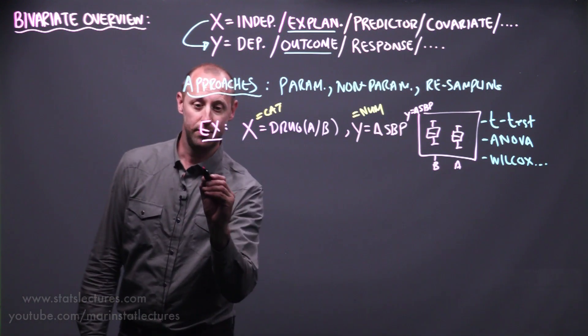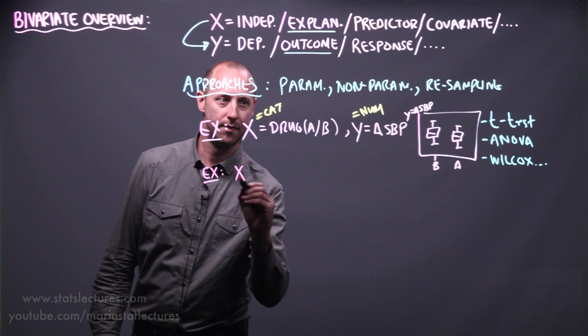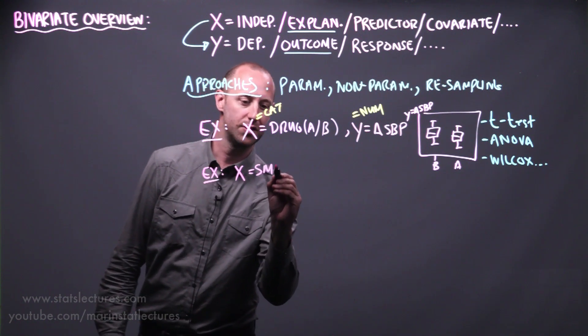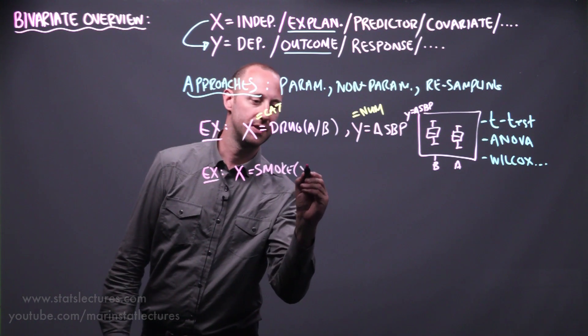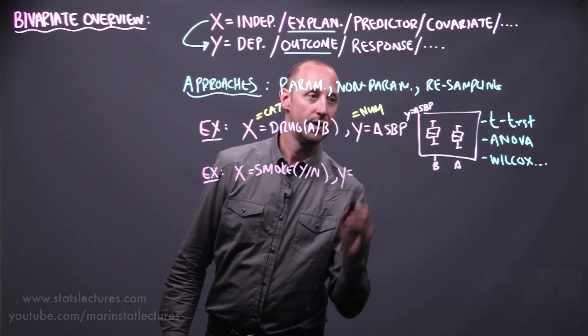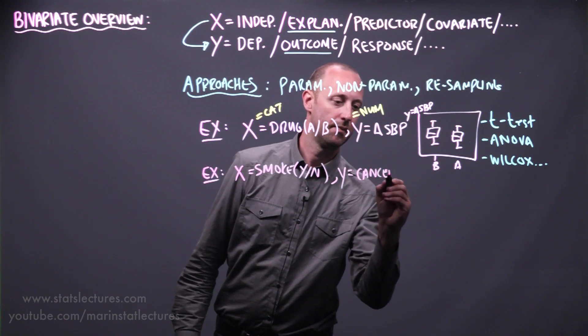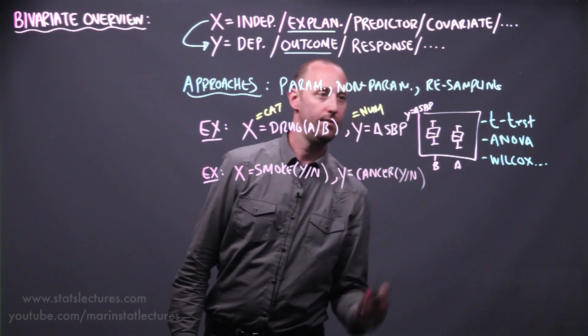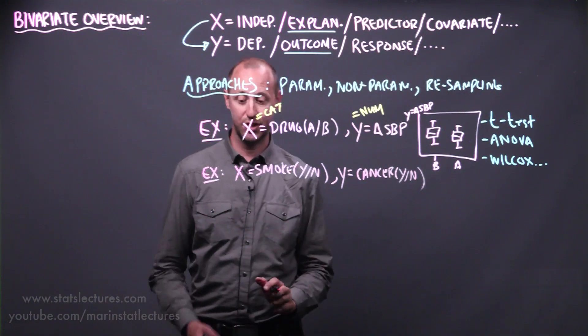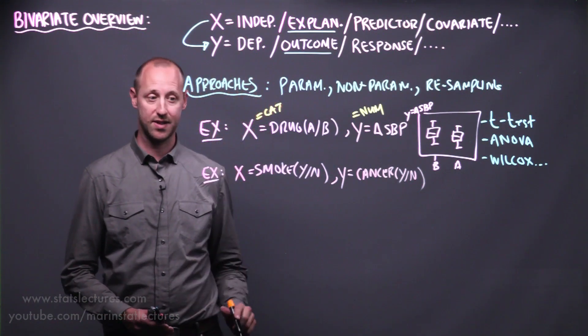A second example we can talk about is considering an x variable of whether or not someone smokes, and let's categorize it as yes or no, and an outcome variable of do they develop cancer, and again let's categorize it as yes or no.